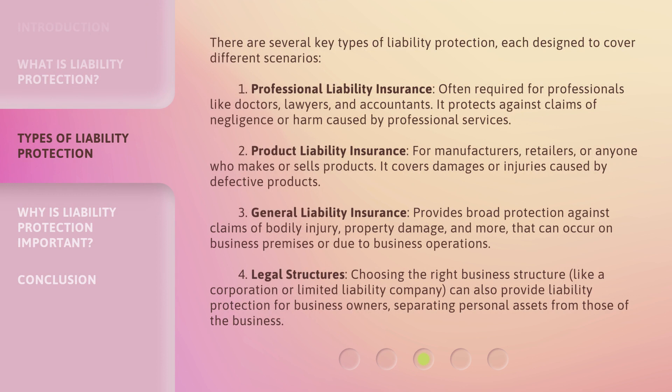There are several key types of liability protection, each designed to cover different scenarios. First, professional liability insurance, often required for professionals like doctors, lawyers, and accountants, protects against claims of negligence or harm caused by professional services. Second, product liability insurance, for manufacturers, retailers, or anyone who makes or sells products, covers damages or injuries caused by defective products.